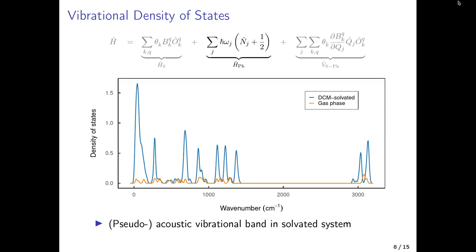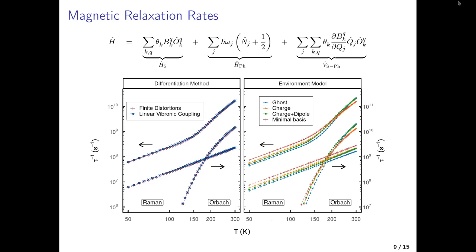All those parameters then enter the spin dynamics code to calculate rates. As a flavor of the vibrational states in these systems: comparing gas phase and solvated molecule, the gas phase shows ligand stretches at high wavenumber and some lower-wavenumber modes, while including the DCM molecules adds many optical vibrational bands typical of DCM, and importantly a large acoustic band at very low frequency — representing the rigid body movements needed to describe Raman rates.